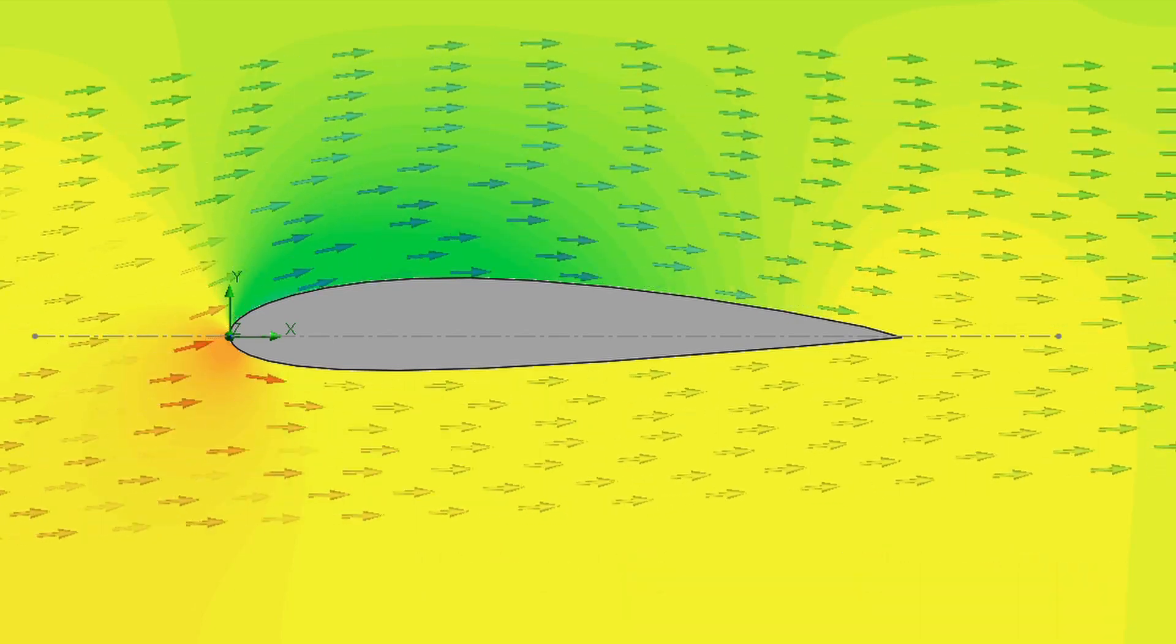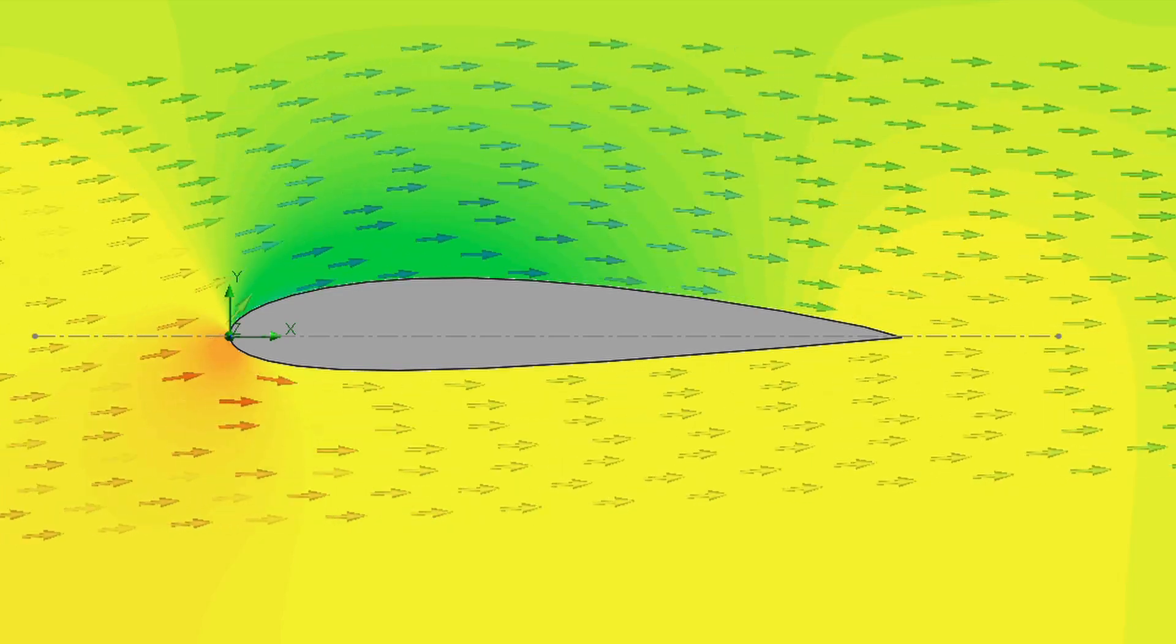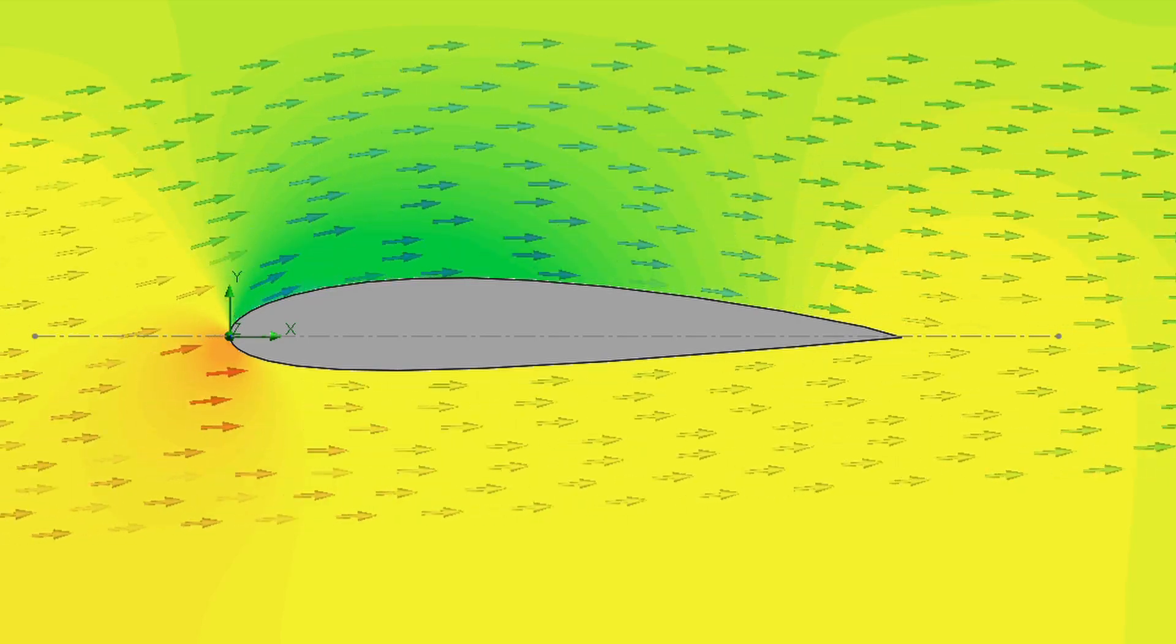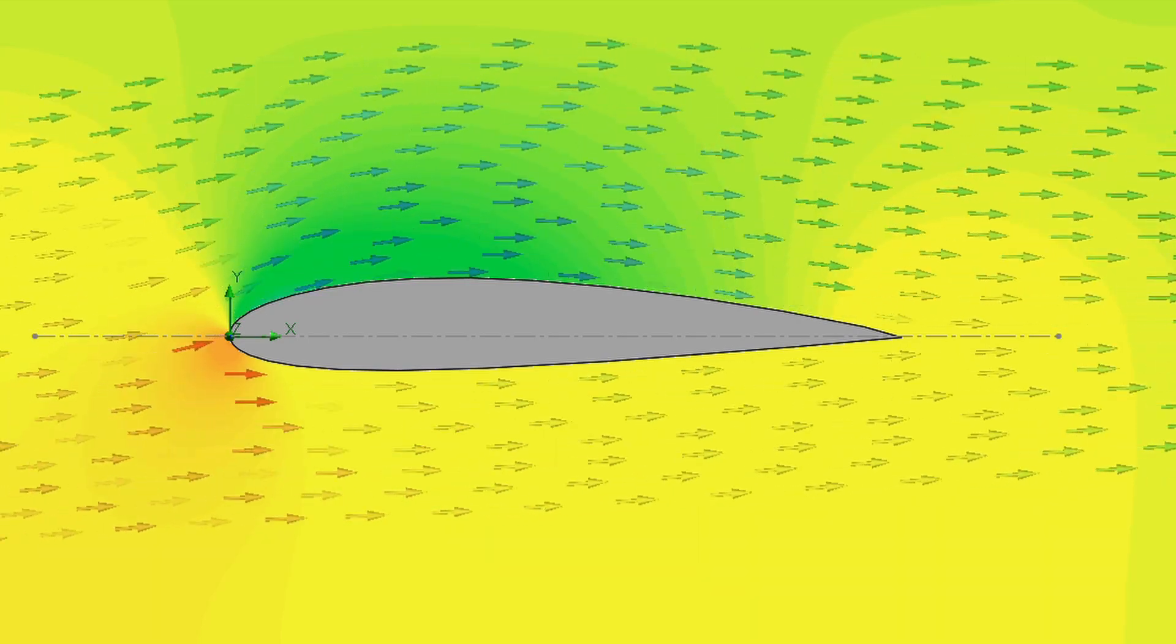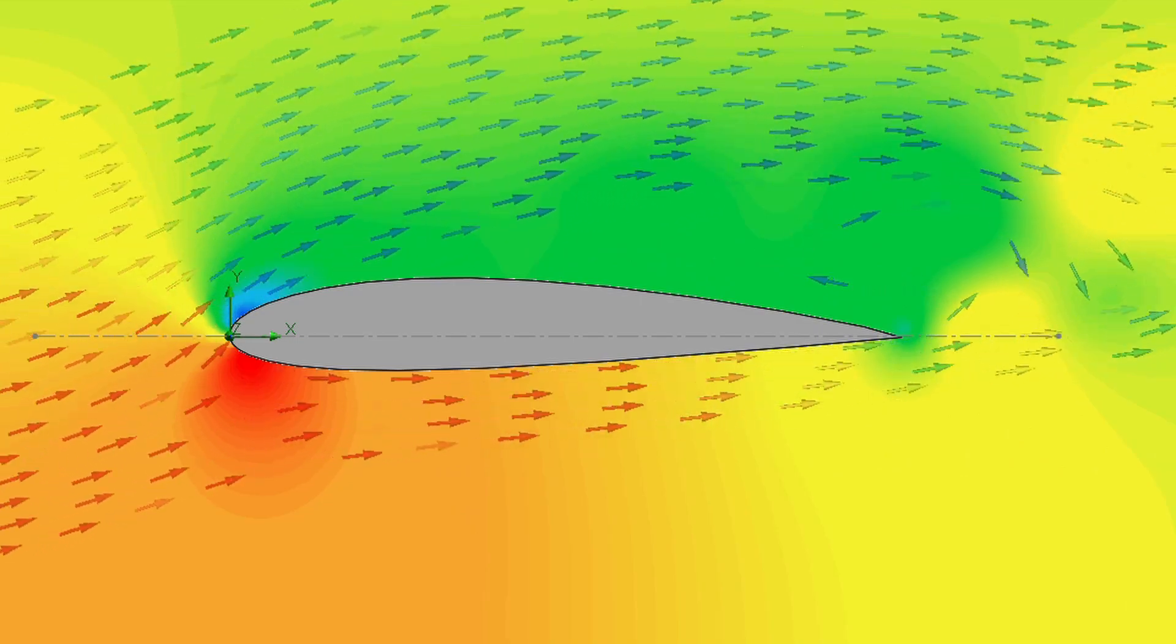There is a limit on how much we can increase the angle of attack, because over a certain limit, typically 12 degrees, there is a phenomena called stall. The stall occurs when the air flow separates from the surface of the wing, resulting in less lift and higher drag.